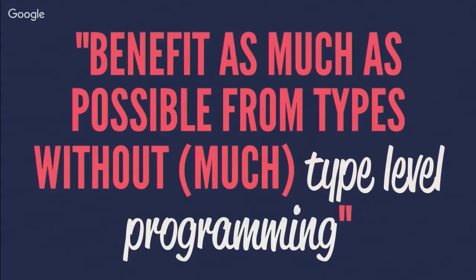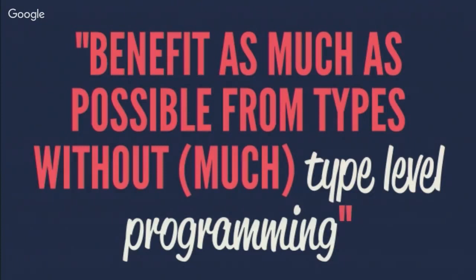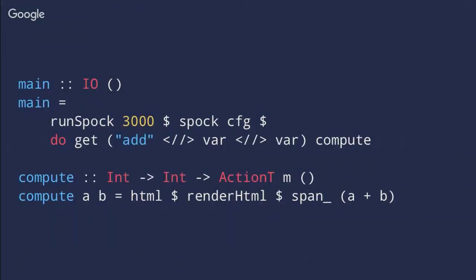That's actually also how Spock started: I started to miss features in Scotty. Scotty's goal was to be really simple, but I thought that was maybe a little too simple for general purpose web programming, and there were some performance problems. Another motivation for Spock was to benefit as much from types as possible, but without much type-level programming - a different approach from something like Servant, which is very type-focused. I wanted you to program at the value level and have the types match up, without needing to know concepts like type-level lists when using Spock.